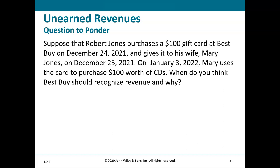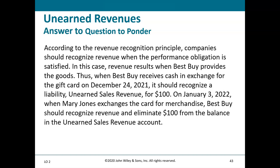Suppose Robert Jones purchases a $100 Best Buy gift card on December 24th, gives it to his wife Mary on December 25th, and on January 3rd, 2022, Mary uses it to buy $100 of merchandise. Per the revenue recognition principle, Best Buy recognizes a liability (Unearned Sales Revenue) on December 24th when cash is received. On January 3rd, 2022, when Mary exchanges the card, Best Buy eliminates the $100 liability and recognizes revenue.